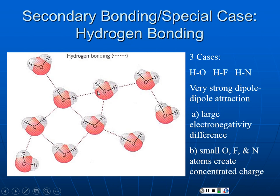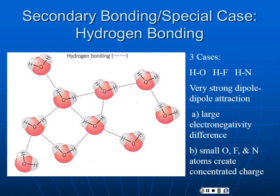A special version of secondary bonding is hydrogen bonding. Importantly, this is not about how hydrogen bonds to oxygen — that's a covalent bond. It's about what bonds the molecules together. When hydrogen bonds to oxygen, fluorine, or nitrogen, you get very strong polarization due to the large electronegativity difference: fluorine is ~4, oxygen is ~3.5, nitrogen is ~3, hydrogen is ~2. These elements are also very small, creating highly concentrated positive and negative charges that produce very strong secondary bonds — called hydrogen bonding. Other polar bonds won't produce this powerful secondary bond.